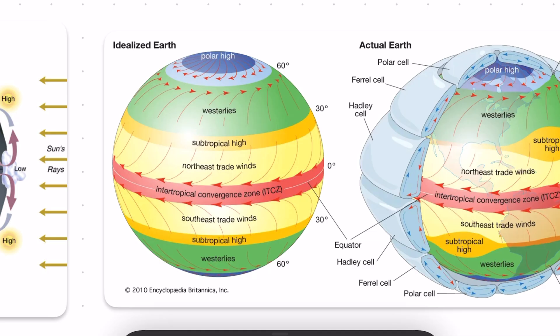Well, deserts form where there are high pressure zones, and on the planet, both hemispheres have two major areas of high pressure: the polar regions, and the subtropical high, which is theoretically a band of high pressure that goes around the entire planet at roughly 30 degrees north and south of the equator.